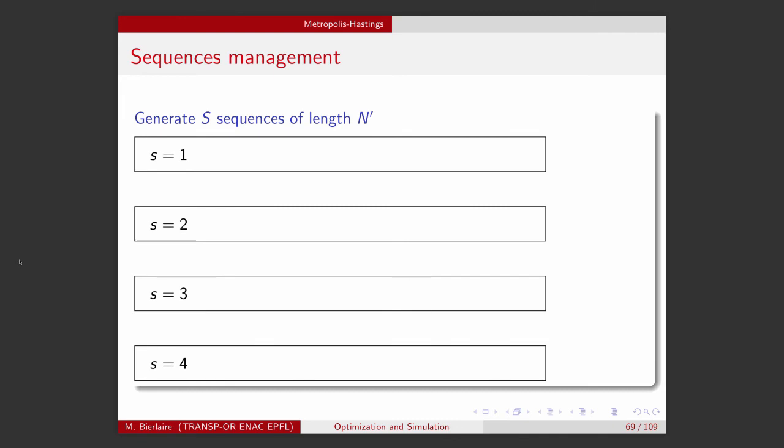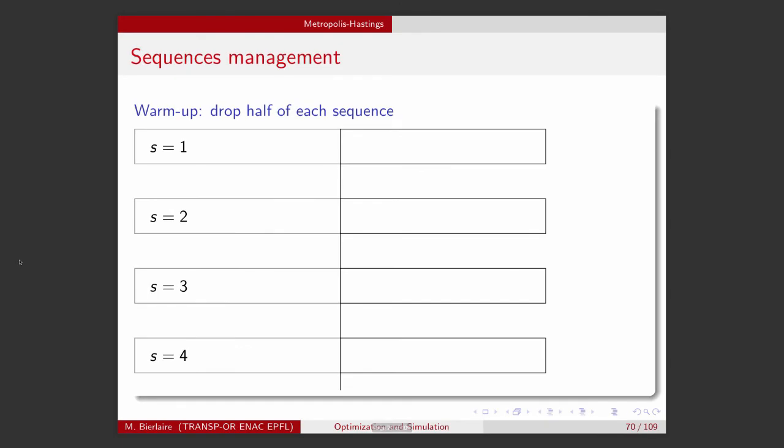The first thing to do is to drop half of the draws from each sequence. So if you remember, the early draws are not useful, as we saw in several pictures. So as a rule of thumb, it's a good practice to basically drop half of each sequence.